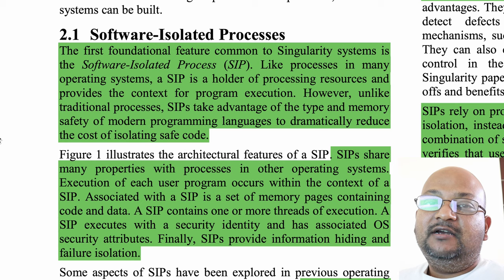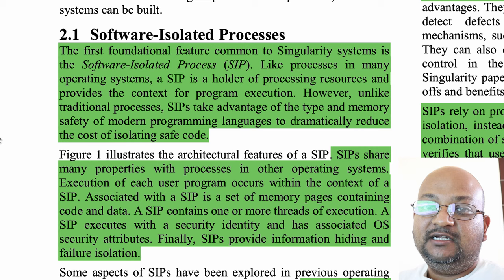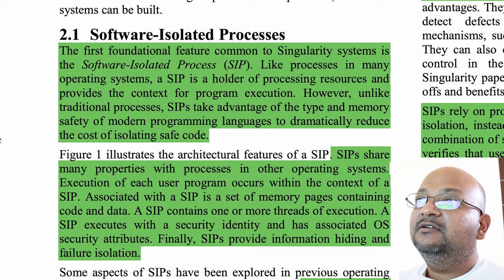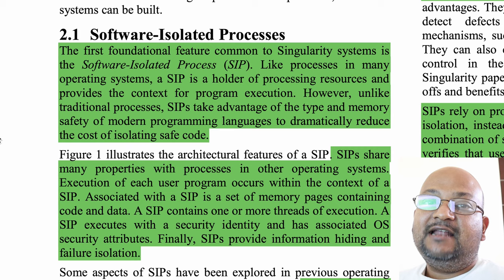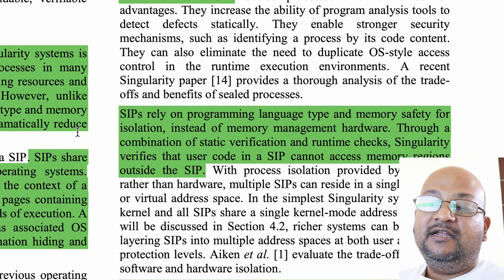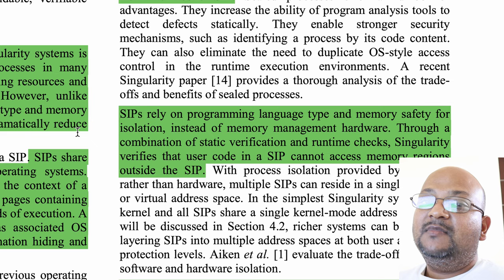Now let's look at their first major innovation, which was the idea of a software isolated process. A software isolated process is very much like a process in a conventional operating system like Unix, in that it encapsulates all the resources needed to execute a particular program. The difference is that it utilizes software mechanisms rather than hardware mechanisms to achieve isolation between processes. Traditional processes rely on hardware support to isolate memory between processes. A software isolated process instead relies on type and memory safety that comes from the underlying type-safe language. The end result is the same: code running in one process cannot access the memory of another process.